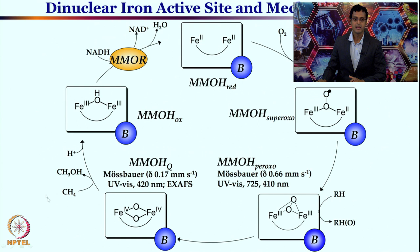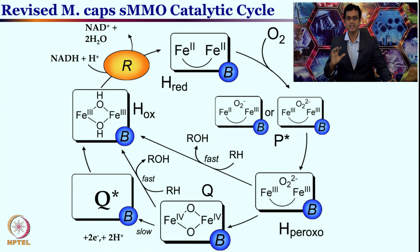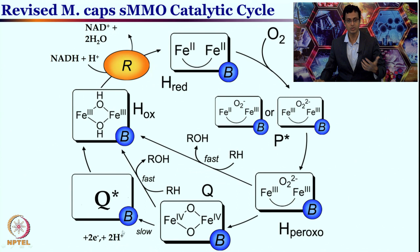MMOH-peroxo and MMOH-oxo bis-mu-oxo are completely characterized by different spectroscopic techniques. Subsequently, hydrogen atom abstraction from methane will give rise to the hydroxo bridge species — the bis-mu-oxo will be converted to hydroxo, and methane will be converted to methanol. There is a twist: a revised mechanism proposes that the Fe(IV)/Fe(IV) dioxo intermediate gives a new intermediate — an oxo-hydroxy species not completely characterized — which is responsible for the real hydroxylation chemistry.